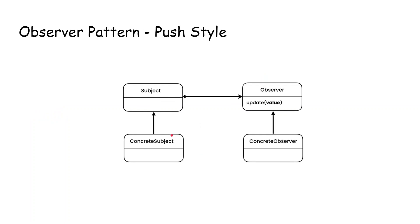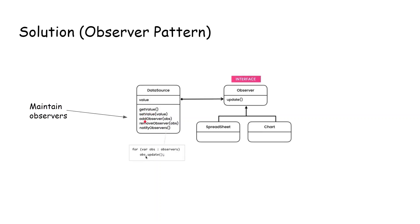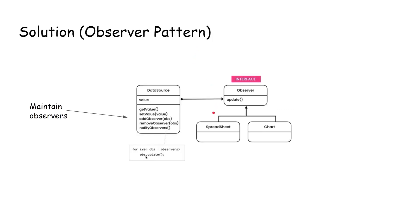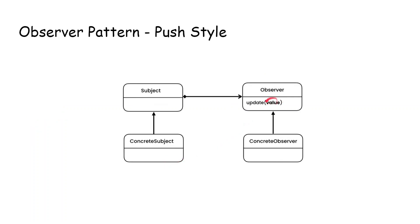For the push style observer pattern, we have a concrete subject — our data source — and a subject base class with add observer, remove observer, and notify observer functionality. We can have different data sources with different value types, like integer or list. The observer interface has an update function that accepts a value. Inside notify observers we pass in a value and iterate all the observers, pushing or updating the data so that all concrete observers receive the published data.